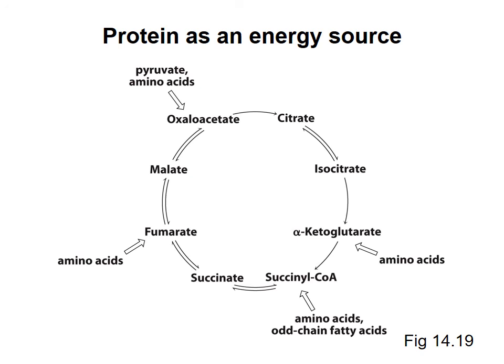So that's it for the citric acid cycle. In the next set of videos, I will describe how reduced electron carriers produced in glycolysis and the citric acid cycle are used to make ATP.